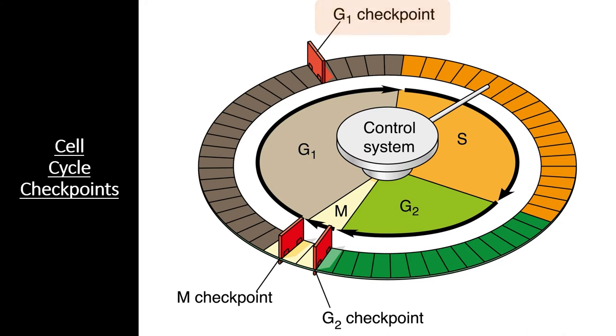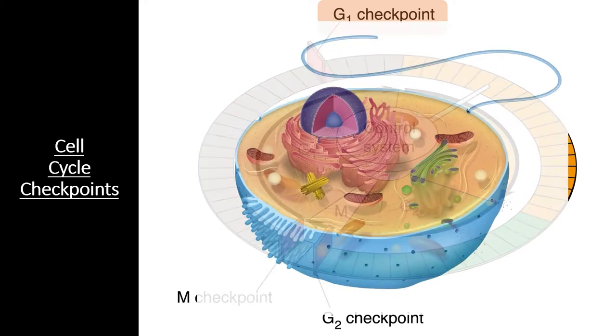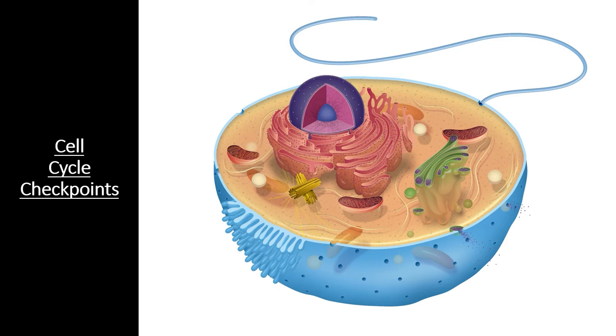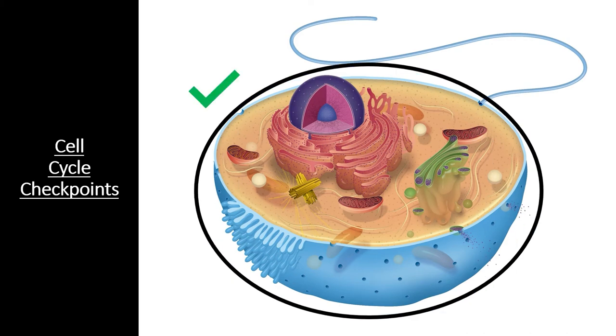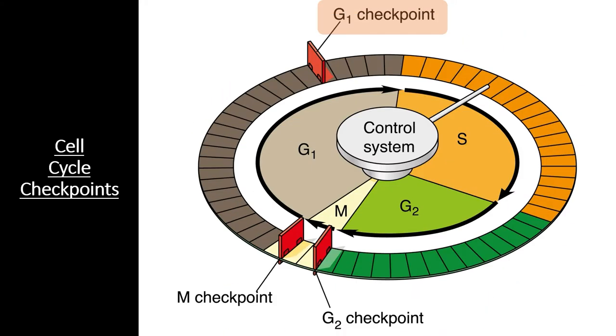The G1 checkpoint happens right before the cell enters S phase and replicates the DNA. During this checkpoint, the cell checks that it is an appropriate size to divide, that it has enough nutrients to supply both daughter cells with sufficient energy to get started, and it checks the DNA to ensure that there's no DNA damage. Each of these signals activates certain proteins, which start a cascade of signal transduction pathways that tell the cell to proceed or pause the cell cycle. If any of these conditions are not met, or if the cell receives a signal to go into quiescence, it will enter the non-dividing G0 phase.